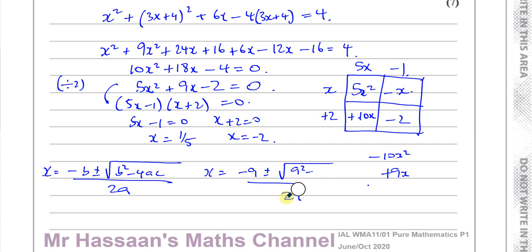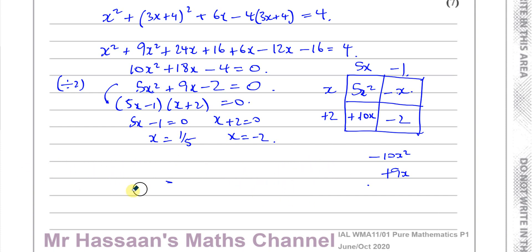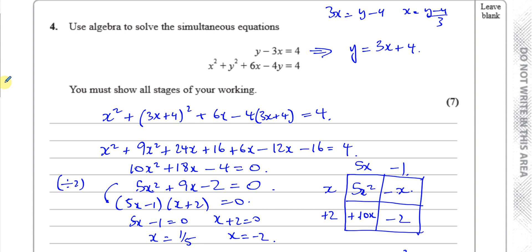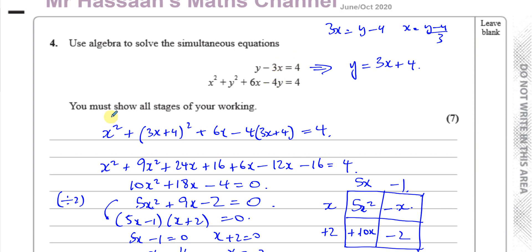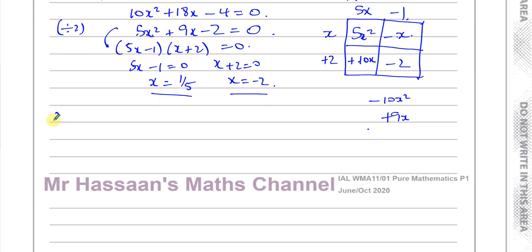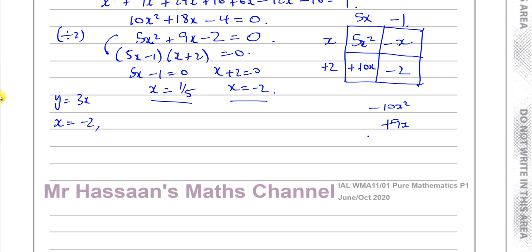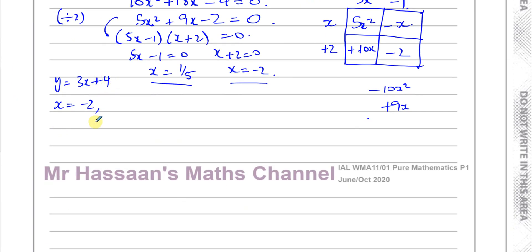A common mistake at this stage is not going on to find the values of y. To solve the equations simultaneously you must find both x and y values. Using y equals 3x plus 4: when x equals minus 2, y equals 3 times minus 2 plus 4, which is minus 6 plus 4, giving y equals minus 2.